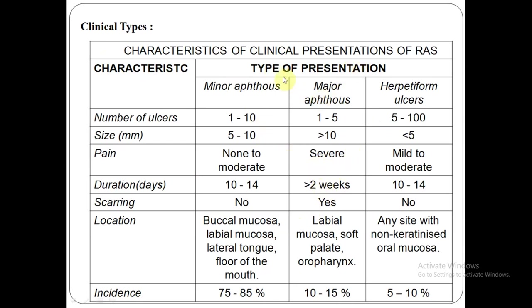Coming to the three subtypes of apthous ulcers in detail: in terms of number, minor apthous ulcers can range from one to ten — usually multiple. Major is usually one or two, up to five. In herpetiform, you always have a huge range from five to 100; you can have almost 50 or 100 lesions in one particular area — colonies or crops of ulcers.